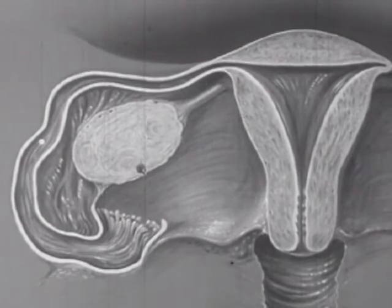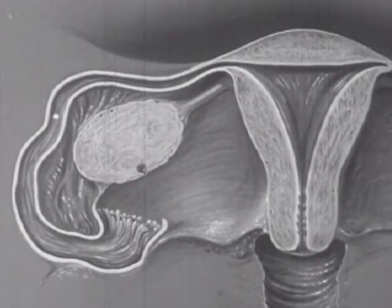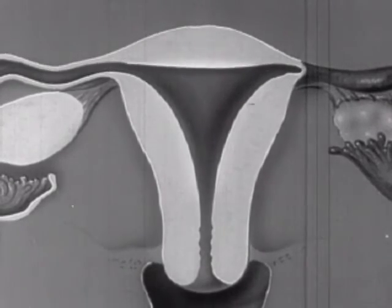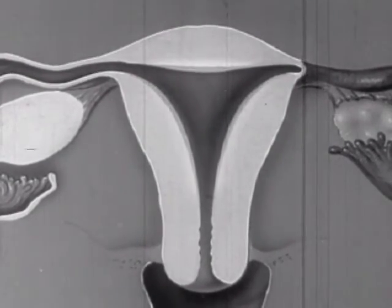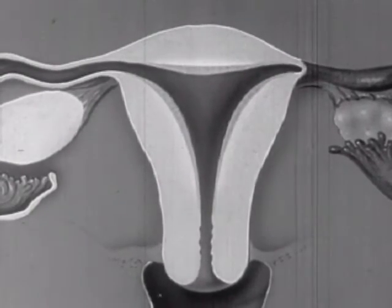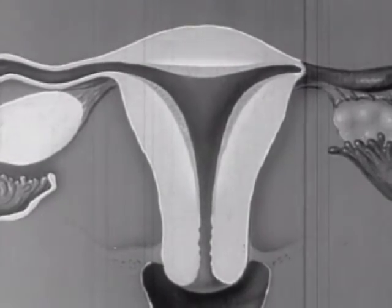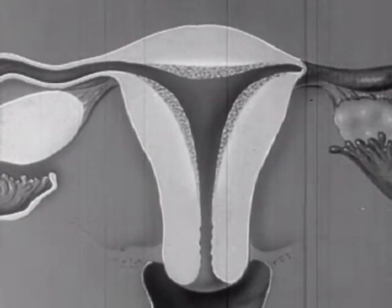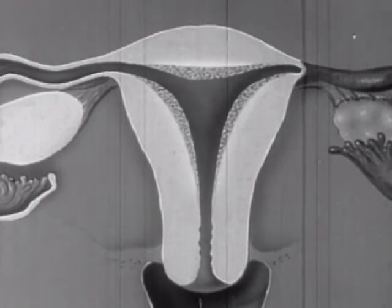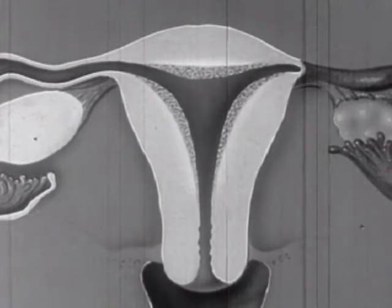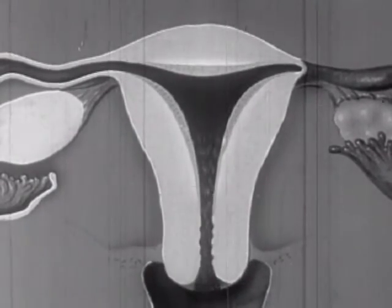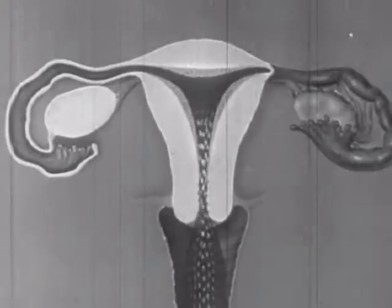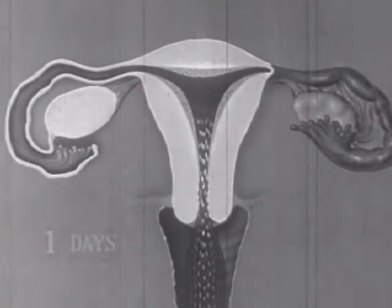The fully developed egg is only one two-hundredth of an inch in diameter. When mature, each egg is capable, if fertilized, of developing into a baby. Moreover, each egg carries all of the hereditary characteristics of the mother. Since the function of the uterus is primarily that of receiving the fertilized egg and nourishing the developing child, the walls undergo a regular cycle of preparation for this job. The lining of the uterus becomes soft, spongy, and engorged with blood and fluids. If fertilization of the egg does not occur, the uterine wall lining breaks down and is discharged from the body as the menstrual flow.